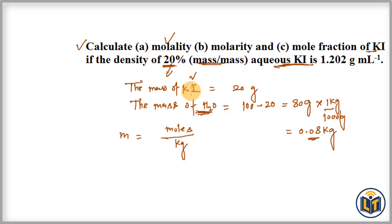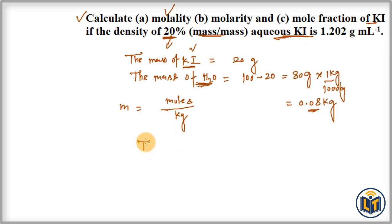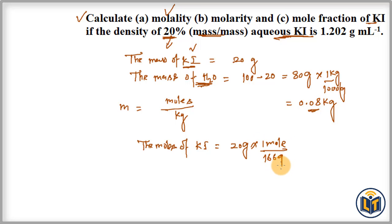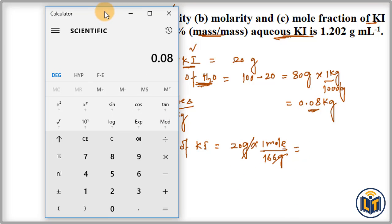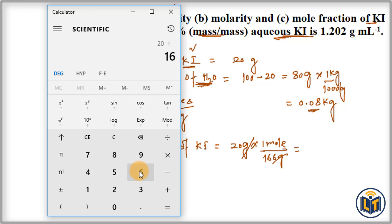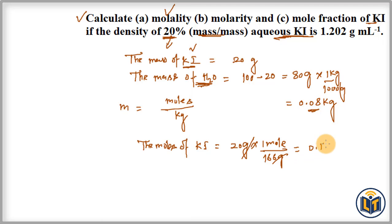Moles of solute — potassium iodide — we can convert mass of potassium iodide into moles using its molar mass. The molar mass of potassium iodide is 166 g/mol, which you can calculate using the periodic table. So moles of KI equals 20 grams divided by 166 g/mol — grams cancel — giving us 0.120 moles of potassium iodide.